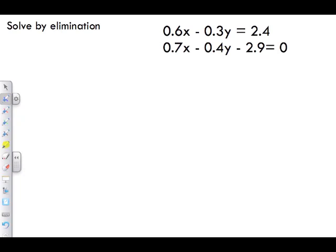Solving by elimination here. What happens when we have our two linear systems in decimal form? My advice to you, get rid of the decimal. Notice how all the decimals are one decimal value, one place value. They're all in the tenths column.